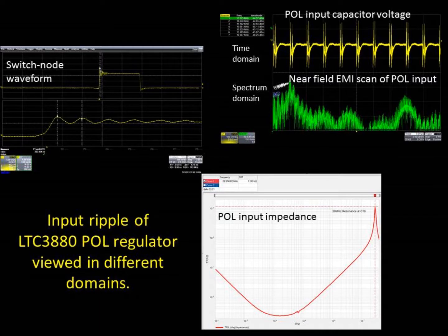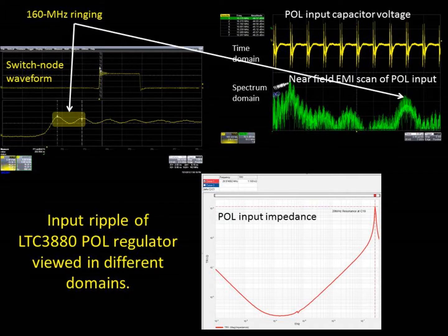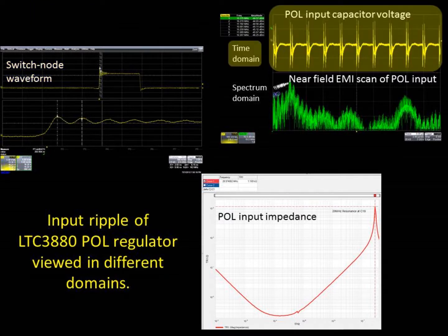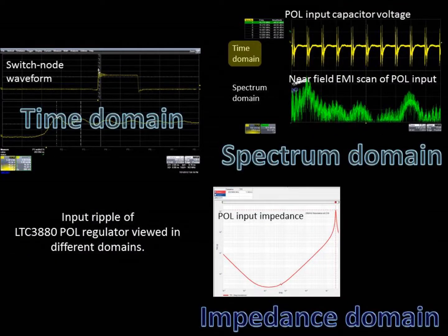In this image, showing measurements related to a point of load input ripple, we can see the point of load switch node waveform, which is 160 MHz ringing on the leading edge. We can clearly see this ringing in the near field EMI sweep that is shown, and we would also see a very similar result if we directly measured the spectrum of the input capacitor voltage, shown above in the time domain. The time domain measurement of the capacitor voltage is rather difficult to decipher in terms of identifying resonances. That's why we have used measurements in multiple domains to isolate the source of the ringing. This also provides insight into the remedy, which in this case is to damp the input resonance.